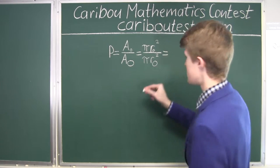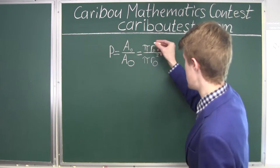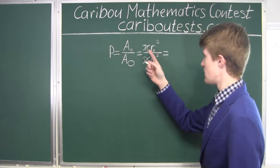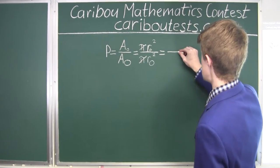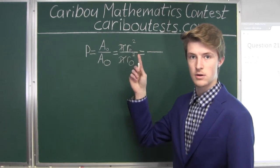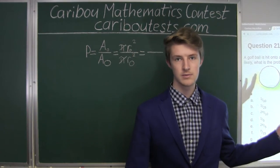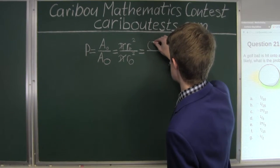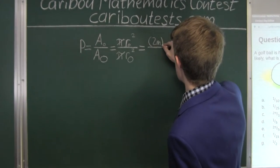Okay, well, the pi's already cancel out. So what we are left with is the radius of the smaller circle, which we know is 2 meters from the last sentence. So we have 2 meters in brackets squared.